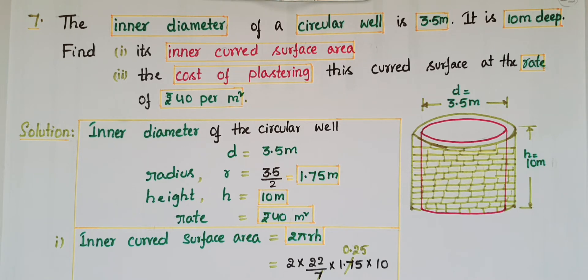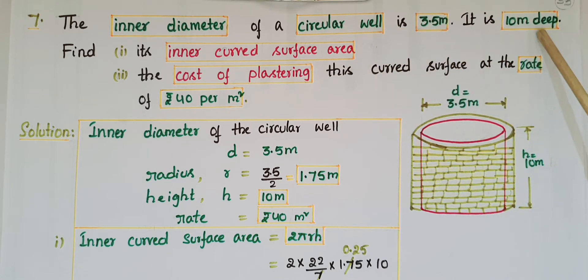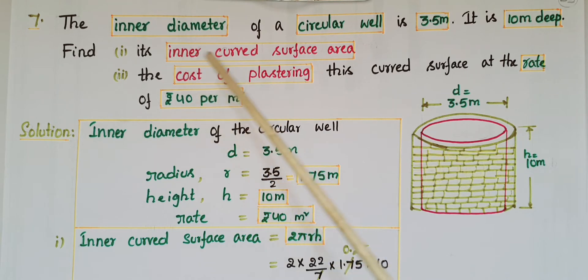The inner diameter of a circular well is 3.5 meters. It is 10 meters deep. Find: (i) its inner curved surface area, (ii) the cost of plastering this curved surface at the rate of 40 rupees per meter square.